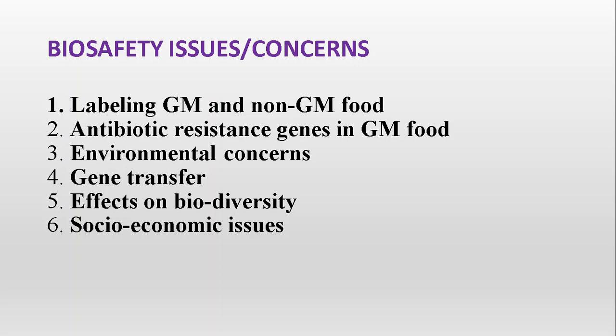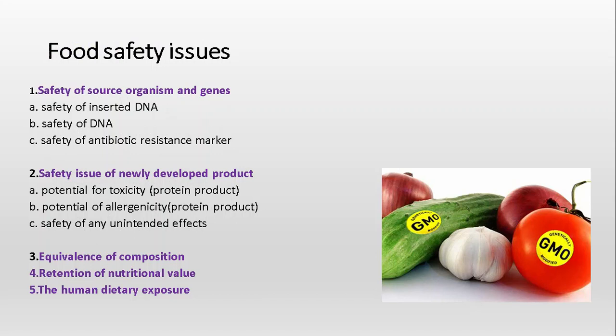Let us elaborate all these issues. First, food safety issues. The first issue is the safety of source organism and gene. When making GMOs, we use two kinds of organisms: the donor, who donates the desired gene, and the recipient, who receives it. The gene of interest being transformed from one organism to another should make a similar product to what we desire, and we must ensure it has been inserted in the correct location of the recipient DNA.